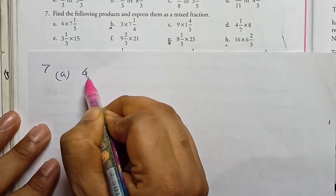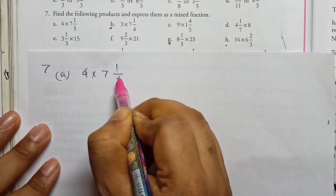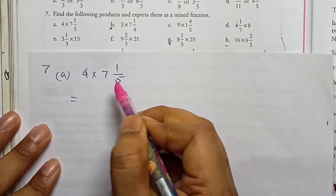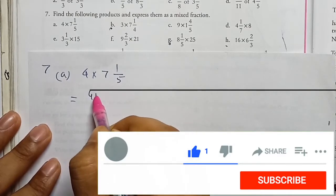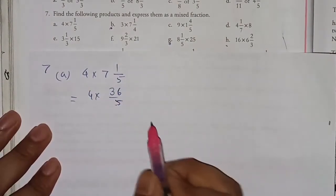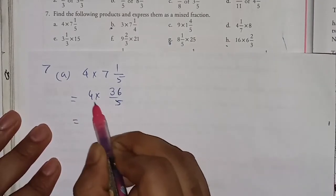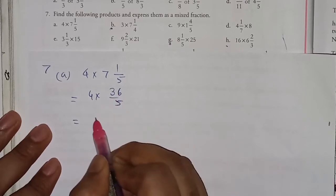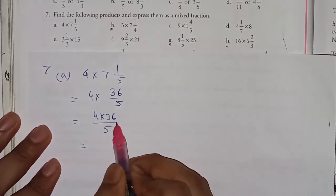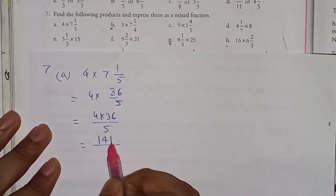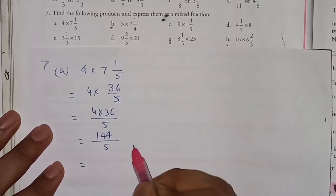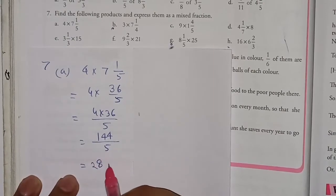Question 7a: 4 × 7 1/5. We convert the mixed fraction to an improper fraction first: 5×7=35, 35+1=36, giving 36/5. Now multiply: 4 × 36/5 = 144/5. Since this is an improper fraction, we convert to a mixed fraction: 144÷5 gives 28 remainder 4, so the answer is 28 whole 4/5.